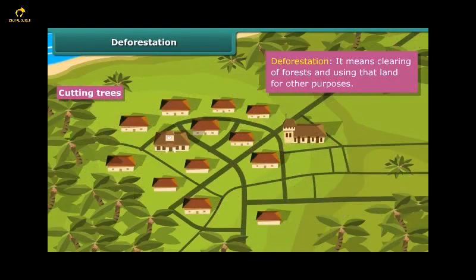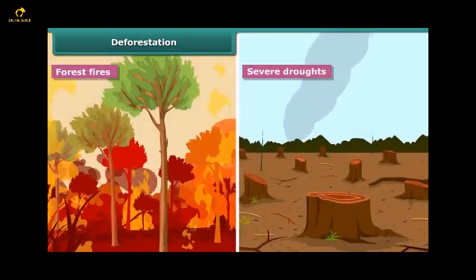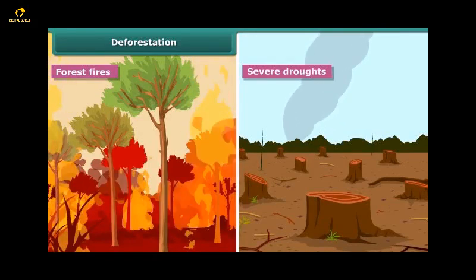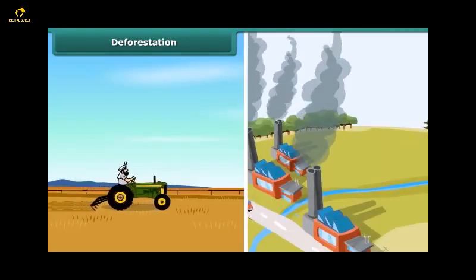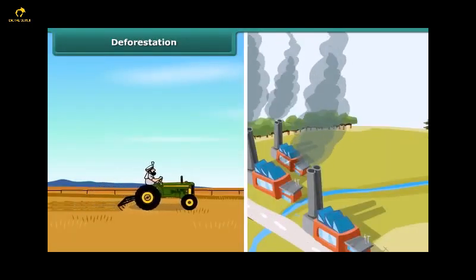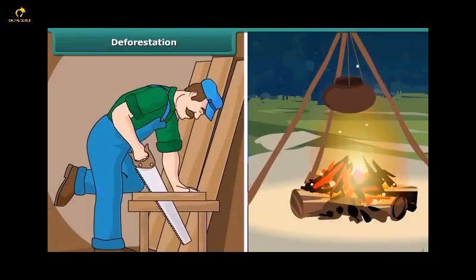Some natural causes of deforestation are forest fires and severe droughts. Man-made causes of deforestation include cutting of forest trees for purposes like procuring land for cultivation, building houses and factories, making furniture, or using wood as fuel.